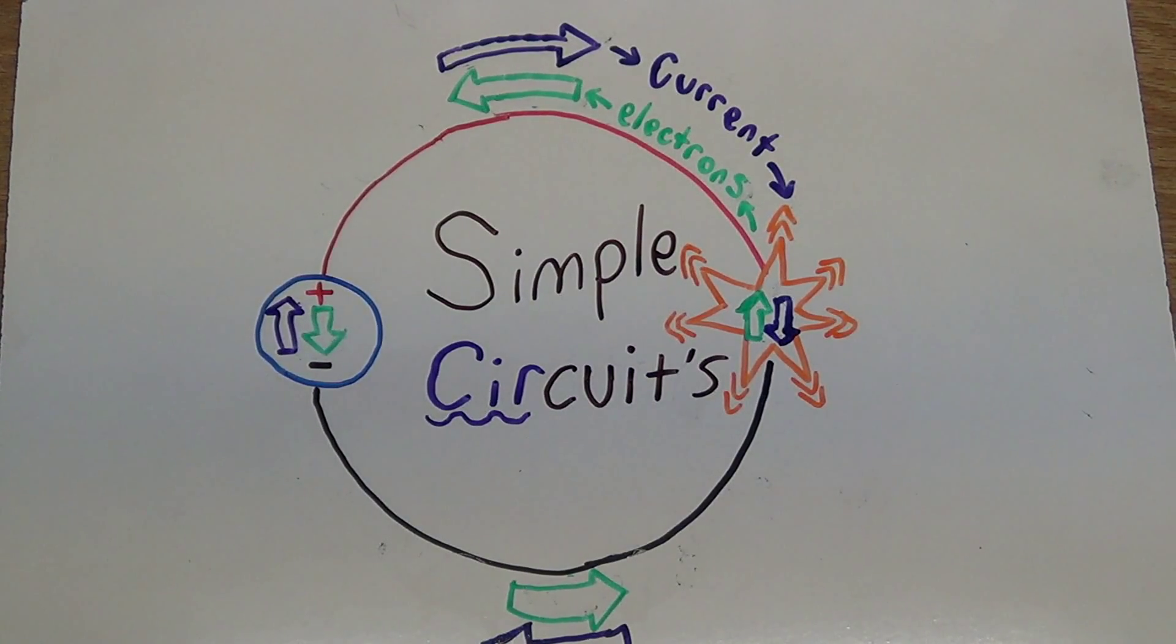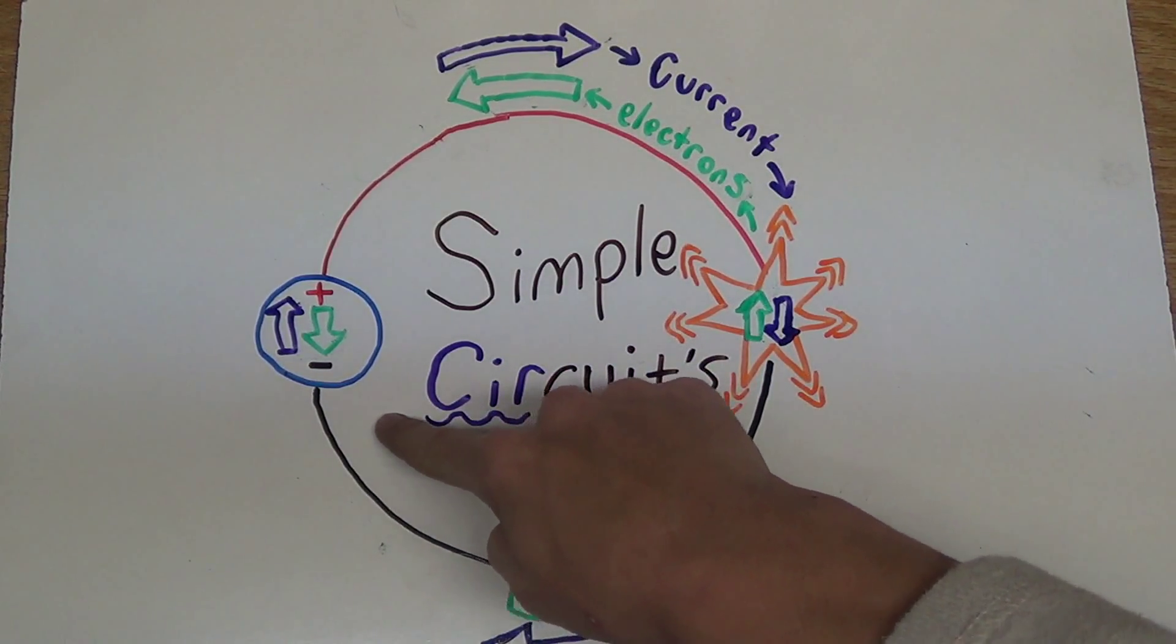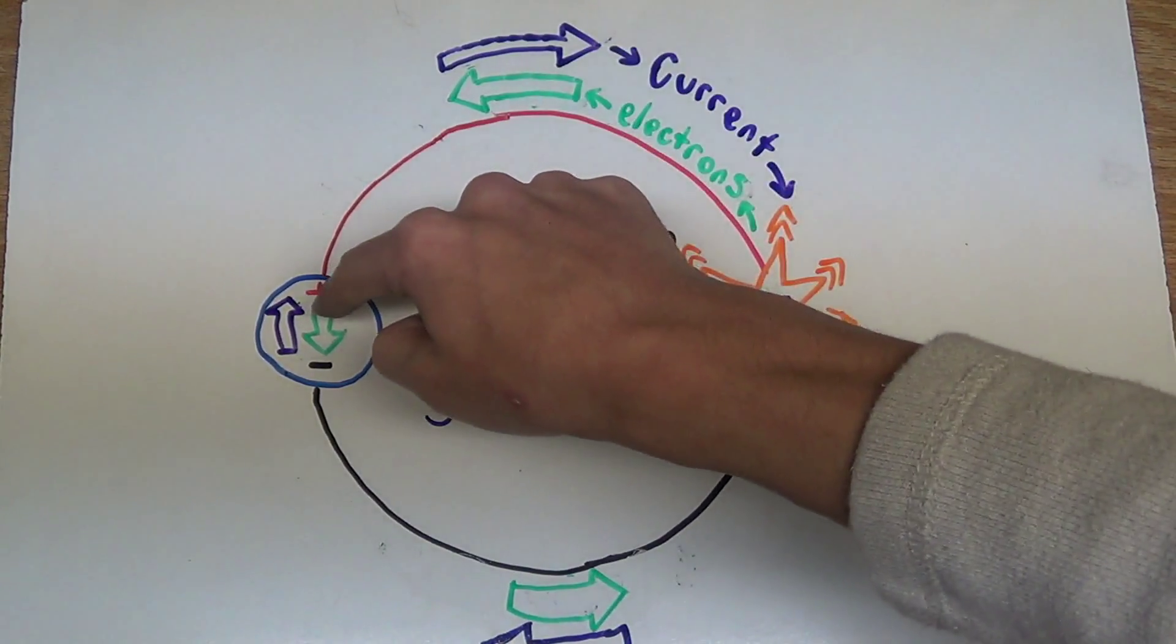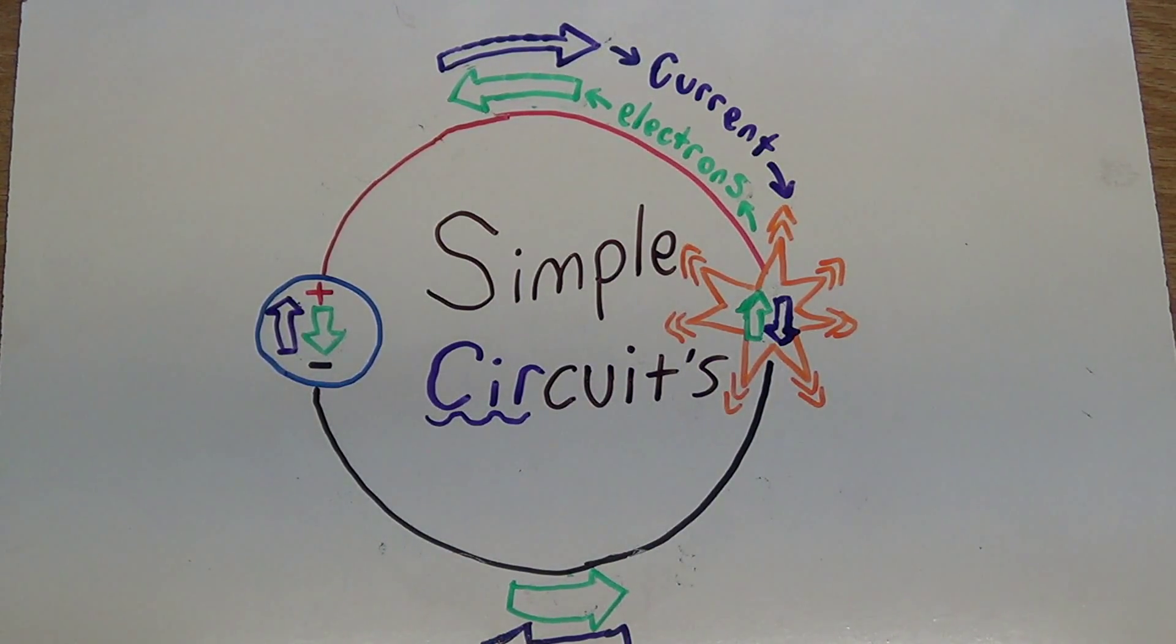Alright, now you're probably wondering why I mentioned that electricity flows from the negative end of a battery, and through the load, upwards, and into the positive. Seems a bit counterintuitive, right? Well, no worries. It's been fixed.